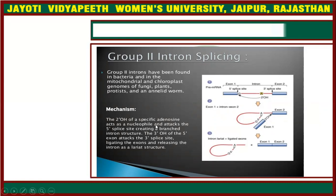The 2-hydroxyl group of a specific adenosine acts as a nucleophile and attacks the 5-prime splicing site. The 3-hydroxyl group of the 5-prime exon then attacks the 3-prime splicing site, ligating the exons and releasing the intron. This process is mainly used for the removal of introns.